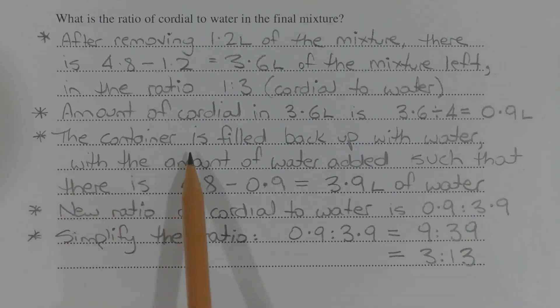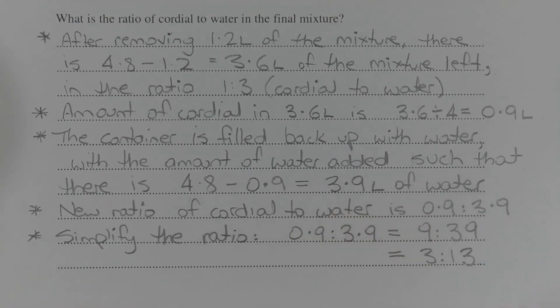The container is then filled back up with water, with the amount of water added such that there is 4.8 minus 0.9, which equals 3.9 litres of water that's added, to bring it back up to 4.8 litres.